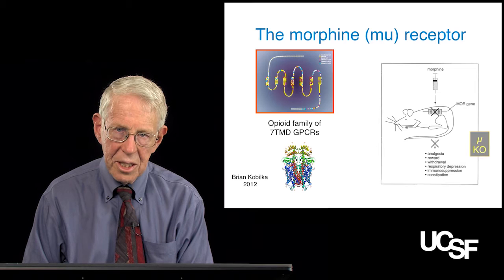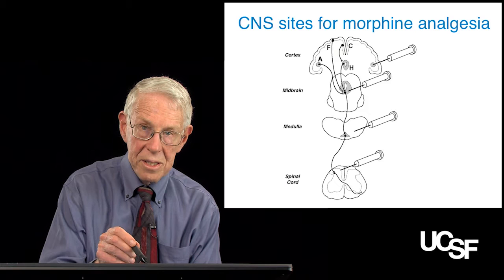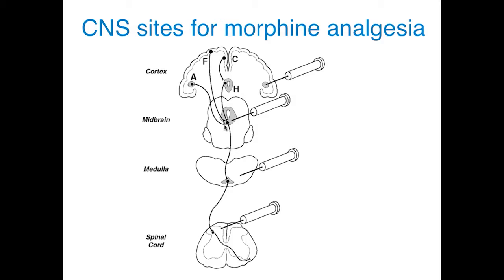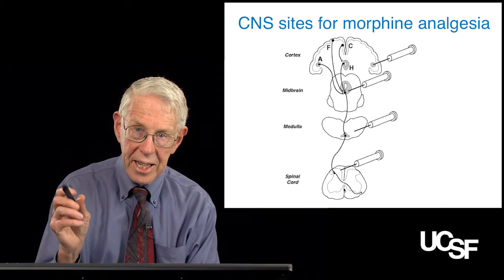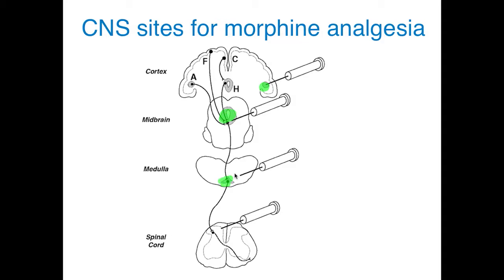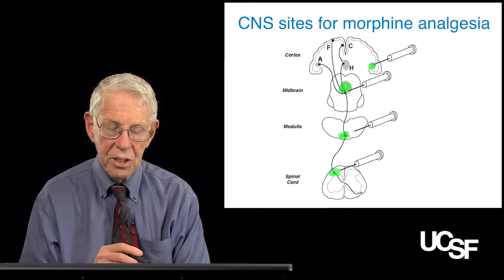Remember, we have this modulatory pathway running from north to south — downward through the central nervous system, from cortex, hypothalamus, midbrain, medulla, and spinal cord. If you take a cannula and microinject a small amount of morphine into any of these sites — the amygdala, the periaqueductal gray, the medulla, the spinal cord — anywhere that you inject morphine in this pathway, you'll get an analgesic effect.